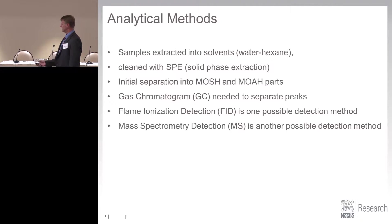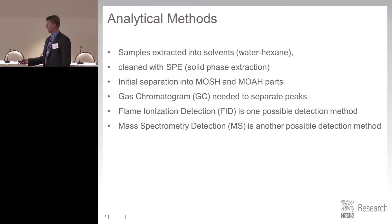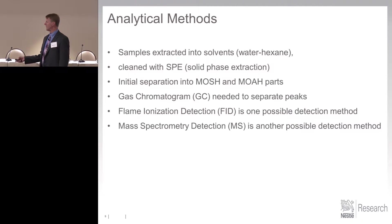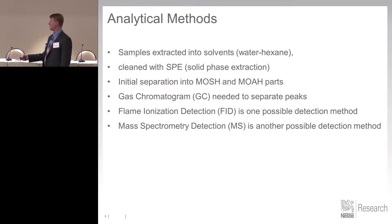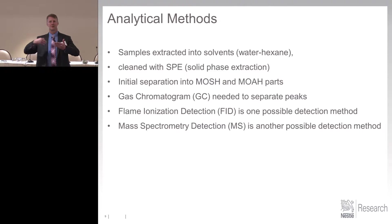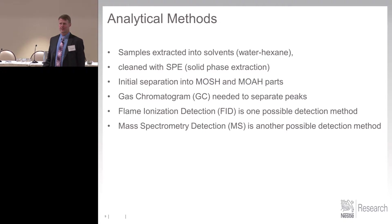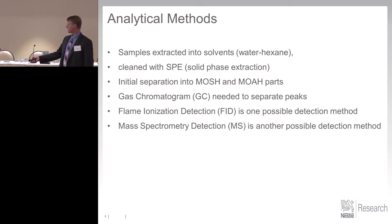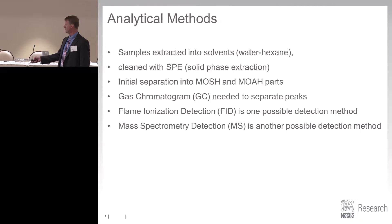Let's talk about analytical methods. Samples are extracted, cleaned with SPE, and this gives an initial separation into MOSH and MOAH parts. So you will see two chromatograms — these are the different fractions out of the SPE. Gas chromatograms need to separate the peaks and identify them by FID, and mass spec is another possible detection method.